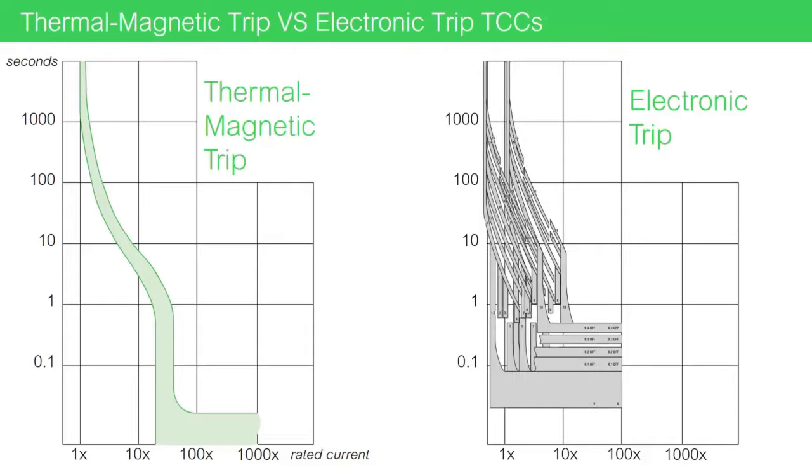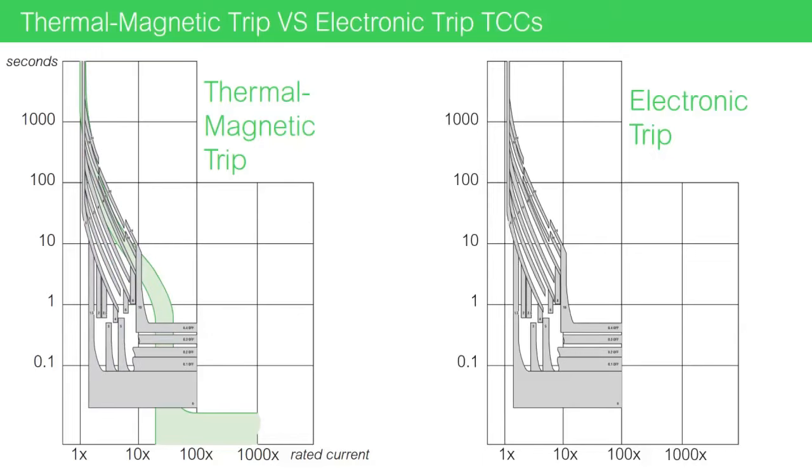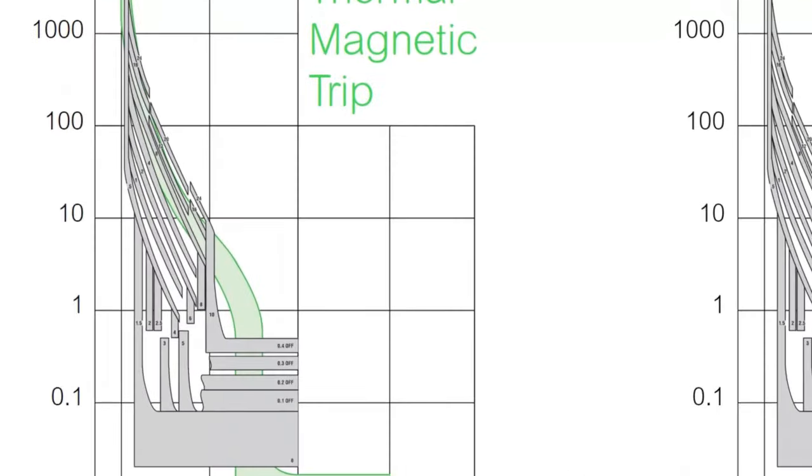If you overlay the electronic time-current curve over that of a thermomagnetic, you'll see a greater range is offered.